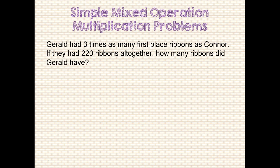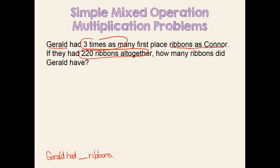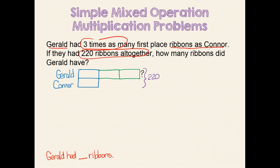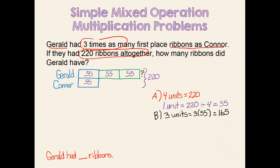This is a similar mixed operation multiplication problem. I'd like you to try this one on your own. Pause the video while you solve it. When you are ready to check your answer, start the video again. Did you remember to rewrite the question in sentence form? Did you identify the important information? Does your model look similar to mine? Did you follow the same process, or did you approach it another way? Did you find that Gerald had 165 ribbons?